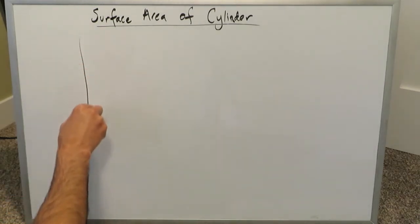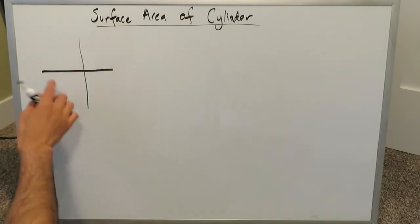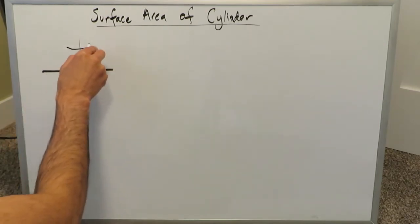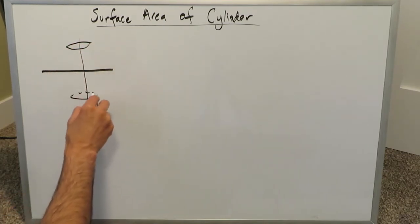You can start this derivation procedure by first drawing a cylinder. It doesn't matter if you're drawing a vertically oriented or horizontally oriented cylinder. I'll just show you a vertically oriented cylinder. It looks something like this.